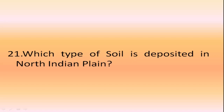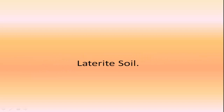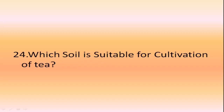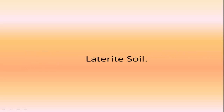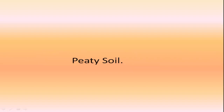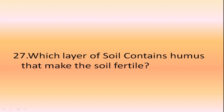Which type of soil is majorly found in Rajasthan? Desert soil. Which type of soil is deposited in the North Indian Plain? Alluvial soil. The two types of alluvial soil are Khadar and Bhangar. Which soil is formed by leaching and oxidation? Laterite soil. Which soil is best known for cotton plantation? Black soil. Which soil is suitable for cultivation of tea? Laterite soil.